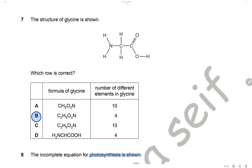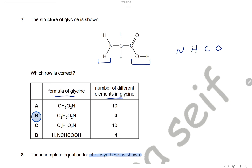Question 7: The structure of glycine is shown. Glycine is an amino acid containing an amino group and a carboxylic group. How many different elements are in glycine? We have nitrogen, hydrogen, carbon, and oxygen — so four different elements. We will choose four for the number of elements.